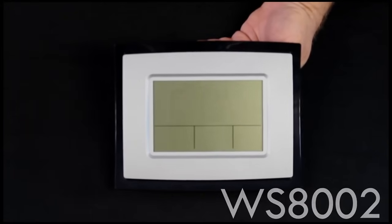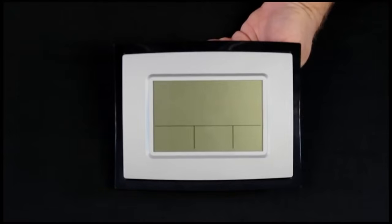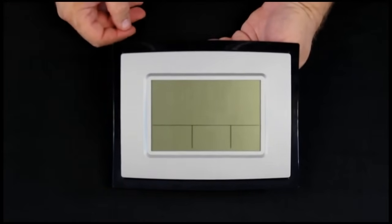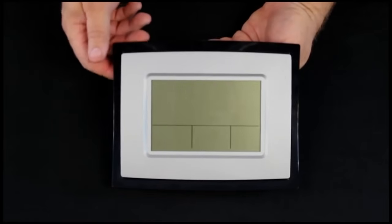This clock gives you the time, indoor temperature, humidity, and the date. This is not an atomic clock. It does not log into Fort Collins, Colorado, so this needs to be set manually.